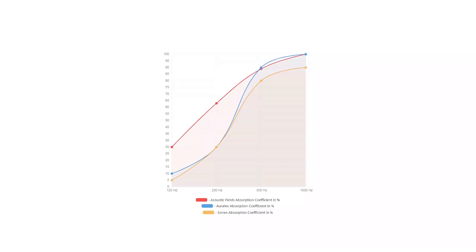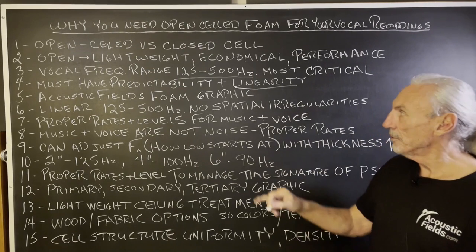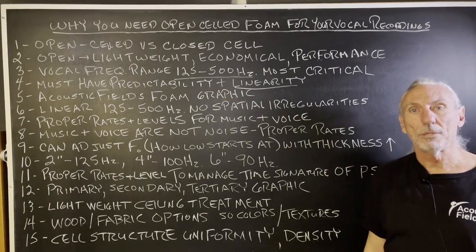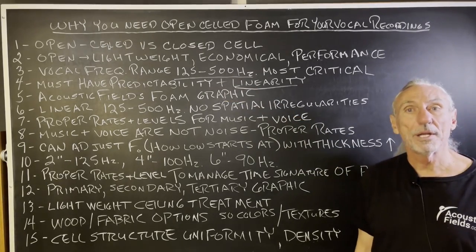Here's our performance from 125 to 500 compared to two competitors. You can see the difference — you can see the smooth linearity, the smooth rate and level. Look at the other two. Why would you use that performance to treat the most critical frequency range when it has huge drops in performance? Those are called spatial irregularities. Why would you use that treatment type when dealing with the most critical frequency range for music and voice?